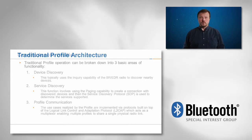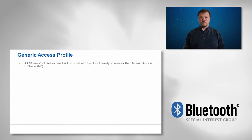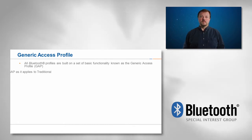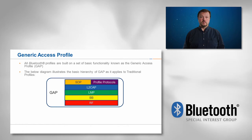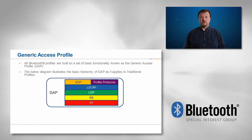All Bluetooth profiles are built on a set of basic functionality known as the generic access profile or GAP. The below diagram illustrates the basic hierarchy of GAP as it applies to traditional profiles. SDP and profile protocols sit atop L2CAP, which allows the protocols to share the radio.